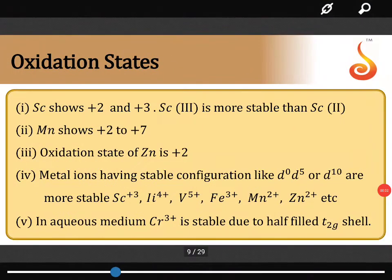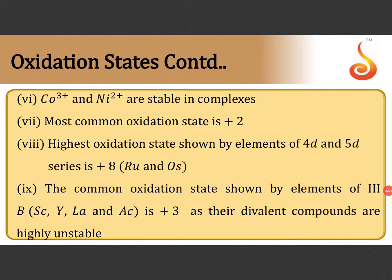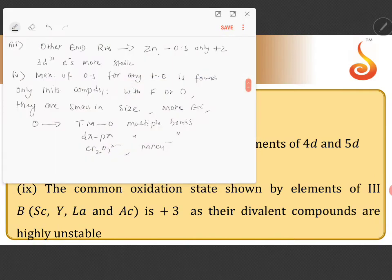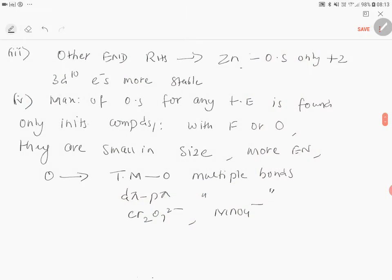So continuing the trends in oxidation states of transition elements. Transition elements in the lower oxidation states, that is for example plus 2 or plus 3, form only ionic compounds.